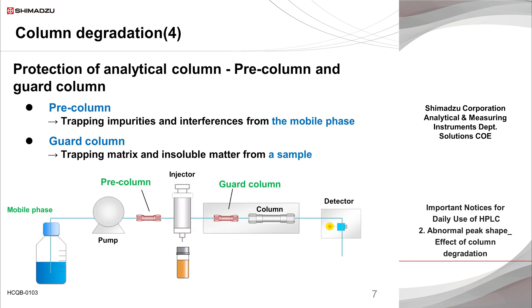In addition to the general concerns about column handling introduced in the previous slide, protective columns are sometimes used to delay the degradation of the analytical column. There are two types of protective columns. A pre-column protects the analytical column from impurities in the mobile phase, while a guard column protects the analytical column from impurities in the sample solution. The pre-column is placed between the pump and the sample injector, as shown here.